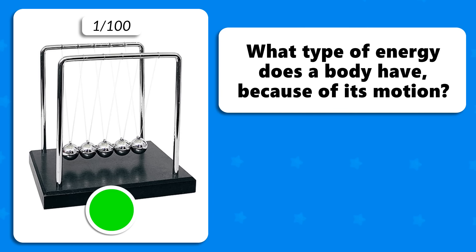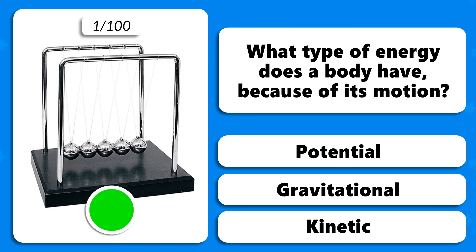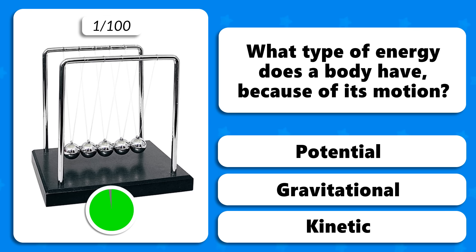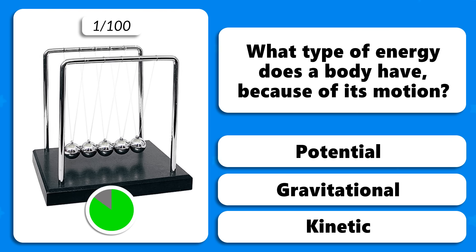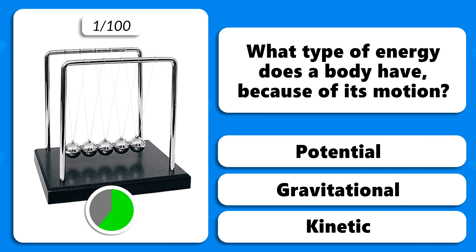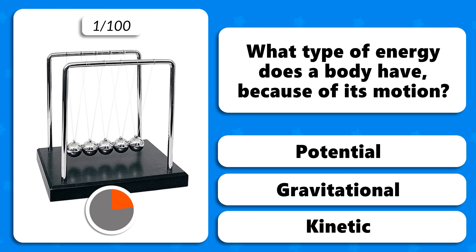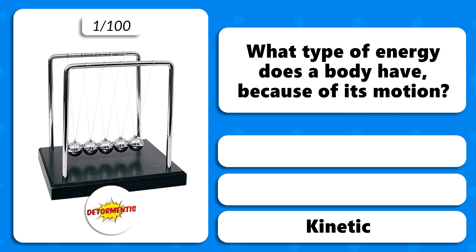Question 1. What type of energy does a body have because of its motion — potential, gravitational or kinetic energy? The correct answer is kinetic energy.